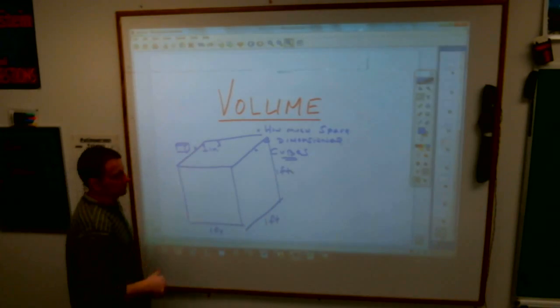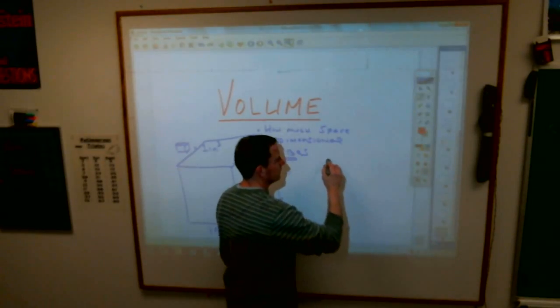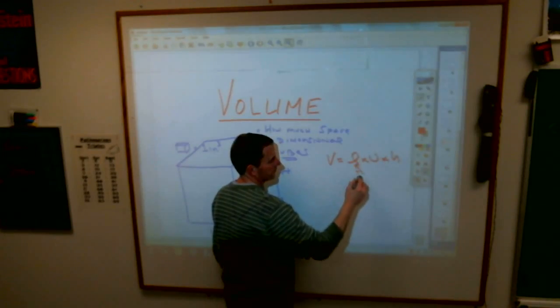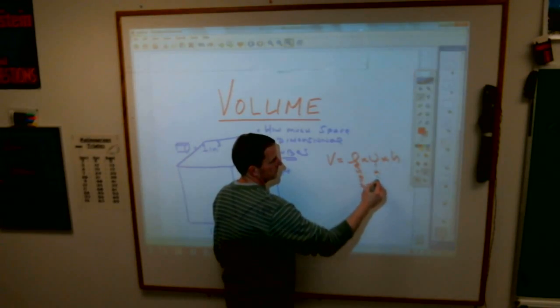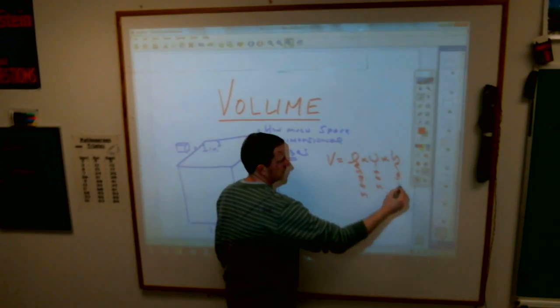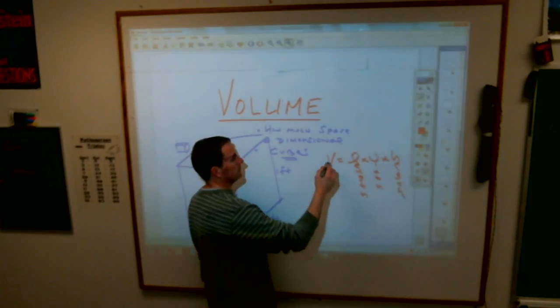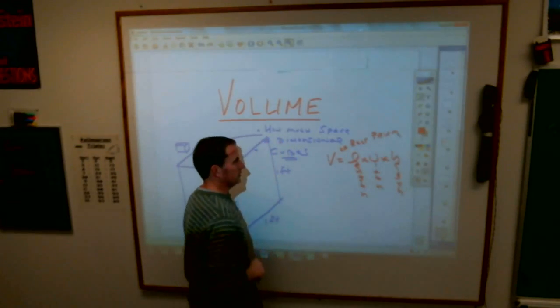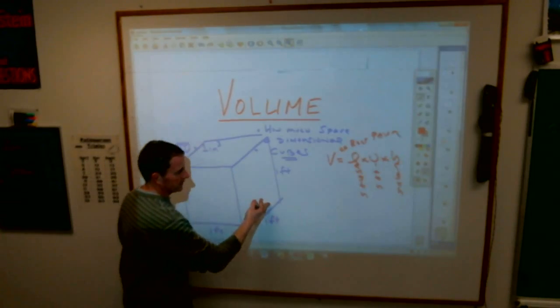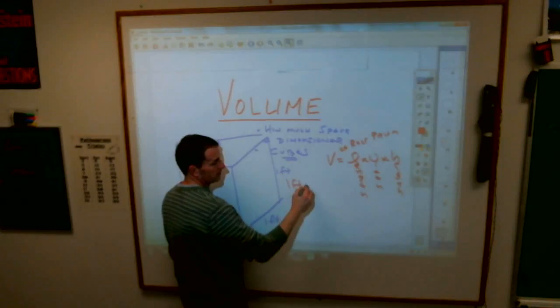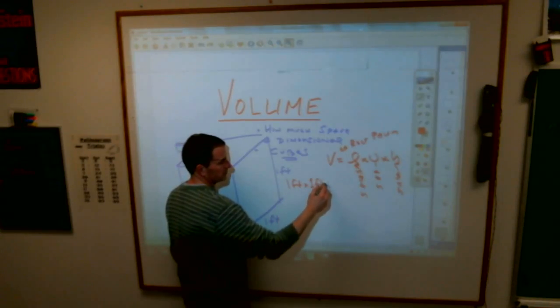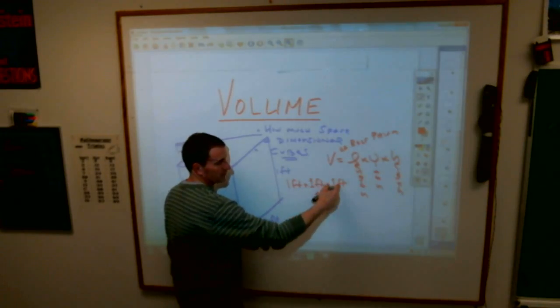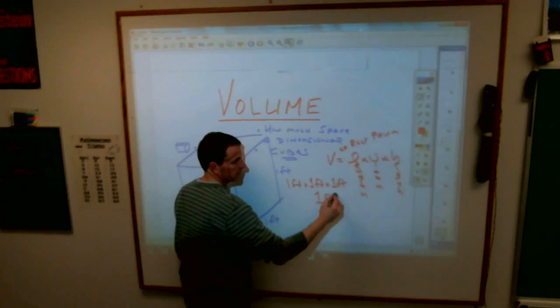If I am looking for volume, let's just write this down. Volume is length times width times height. I should probably emphasize that that is volume of a rectangular prism. If I take one foot, multiply it by one foot, and multiply it by one foot, one times one times one is one. Foot times foot times foot is foot cubed.